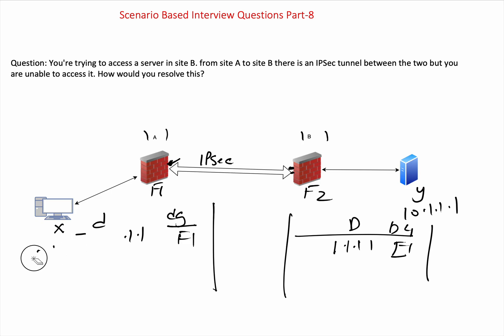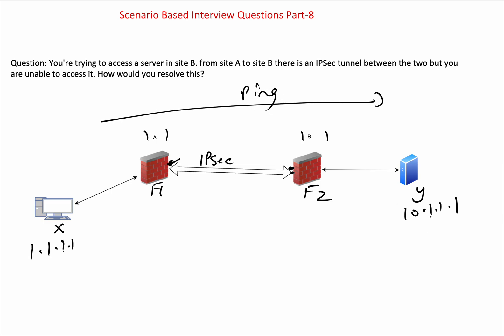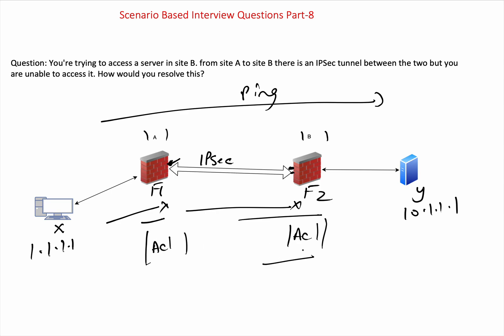A very basic first thing you'll do is a ping from X to Y, and check if it is pinging or not. If it's pinging, then you know it's reachable and you don't need to do a traceroute. If it does not ping, you'll do a traceroute to check exactly where the packet is landing — whether it's failing at F1 or at F2. Either way, you'll check the ACLs on both places.